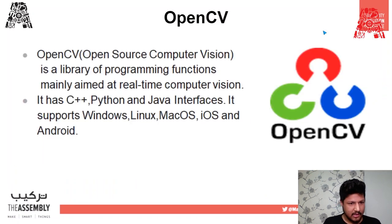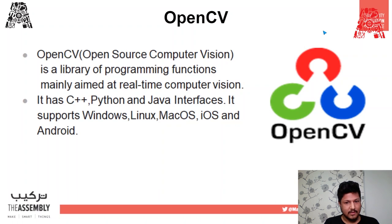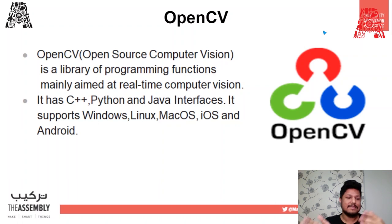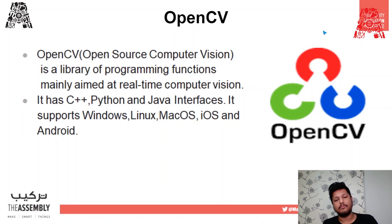So what is OpenCV? OpenCV is an open source computer vision library used for performing real-time computer vision applications — things like facial tracking, facial detection, and motion detection. It has a lot of support; you can use it in C++, Python, Java, and an array of different platforms including Windows, Linux, macOS, iOS, and Android. We'll be using OpenCV for facial tracking.